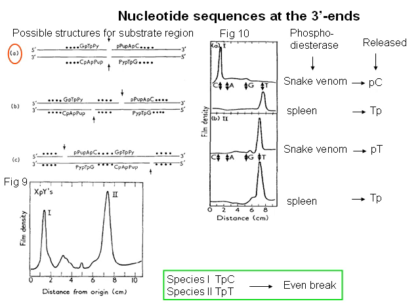They also identified nucleotide sequences at the 3' ends. The scheme shows possible structures for the substrate region: in structure A, the nicks are exactly opposite one another, so the 3' ends of the fragments produced are complementary to the 5' ends; in B and C, the nicks are staggered, so the 3' ends are not necessarily complementary to the 5' ends. In Figure 9, uniformly P32-labeled endonuclease R limit product was digested with micrococcal nuclease, and three-prime terminal dinucleotide monophosphates were analyzed by electrophoresis. Two major radioactive species were observed and each species was hydrolyzed with different phosphodiesterase. As shown by Figure 10, species 1 was TC and species 2 was TT, which was the expected result for an even break.